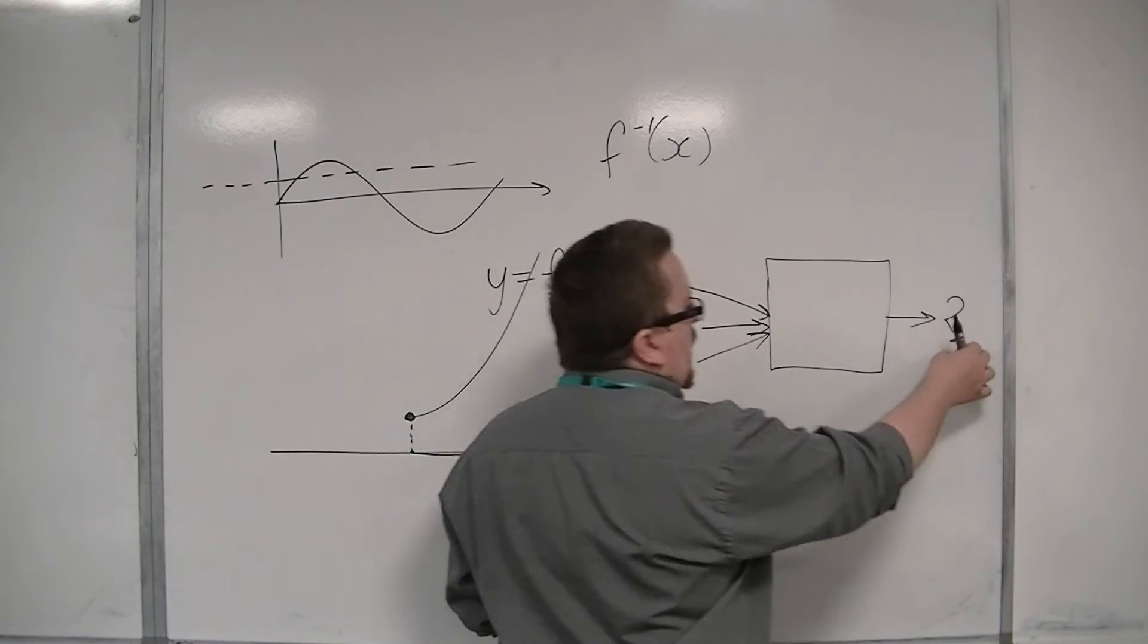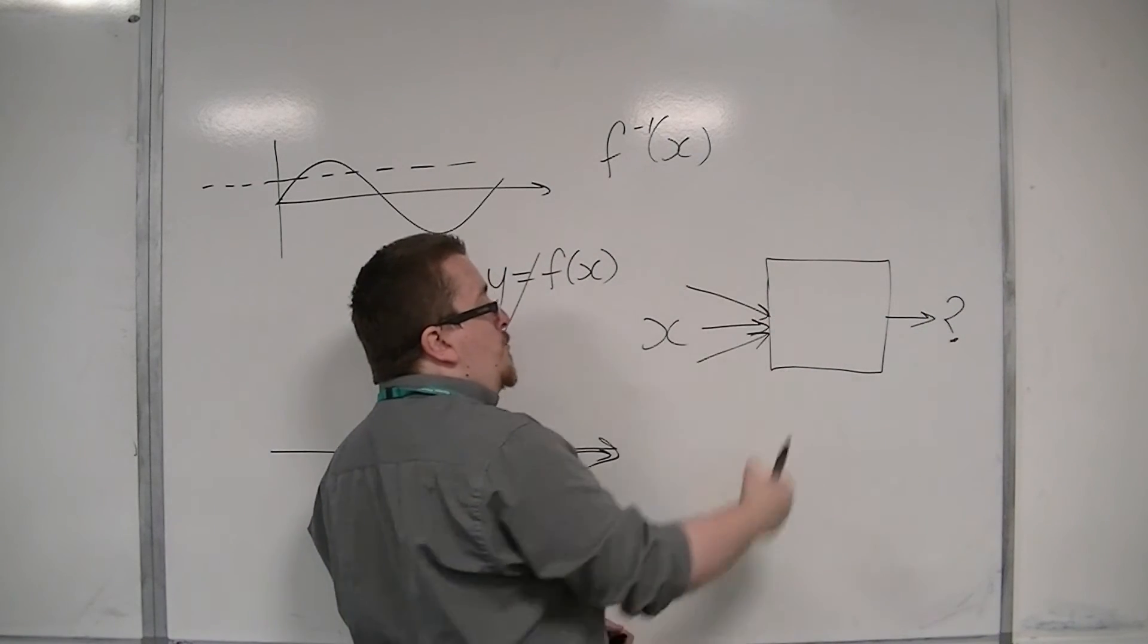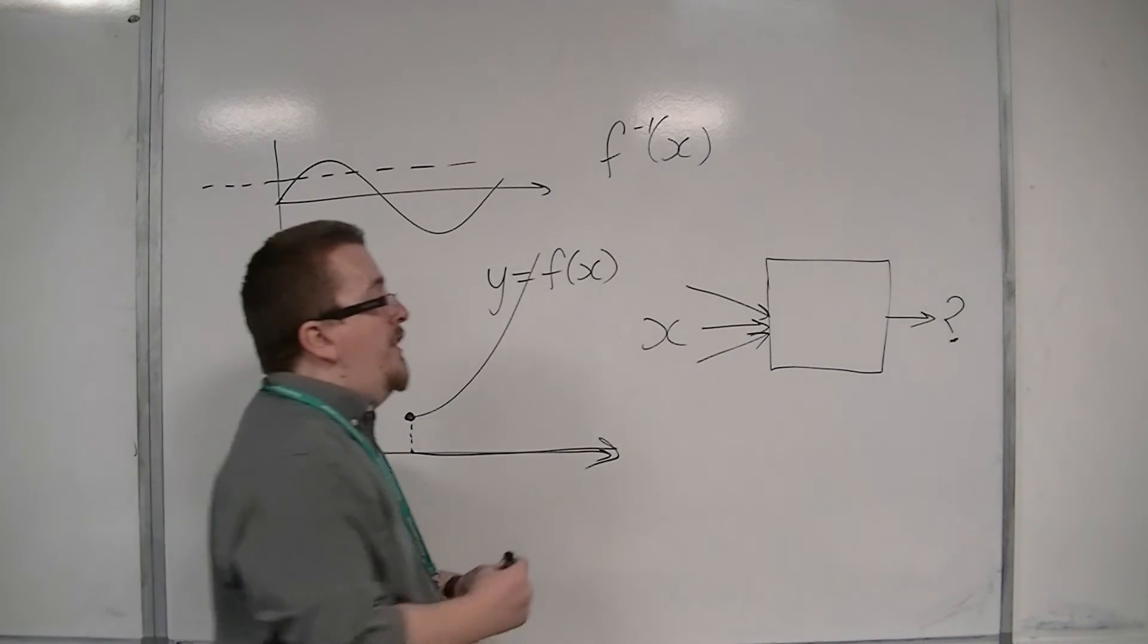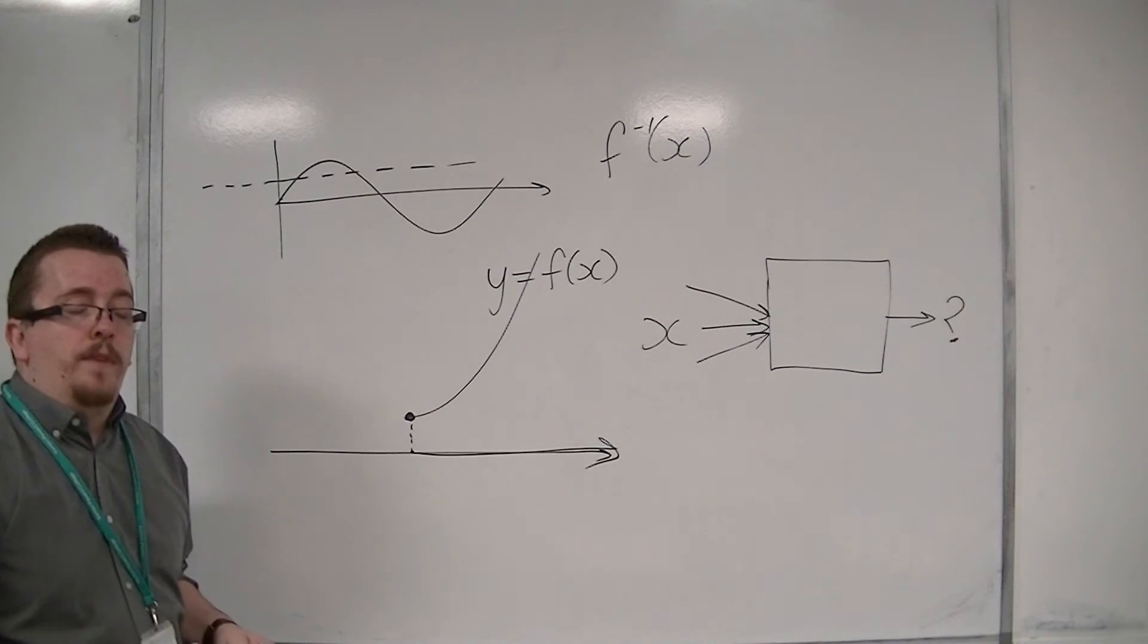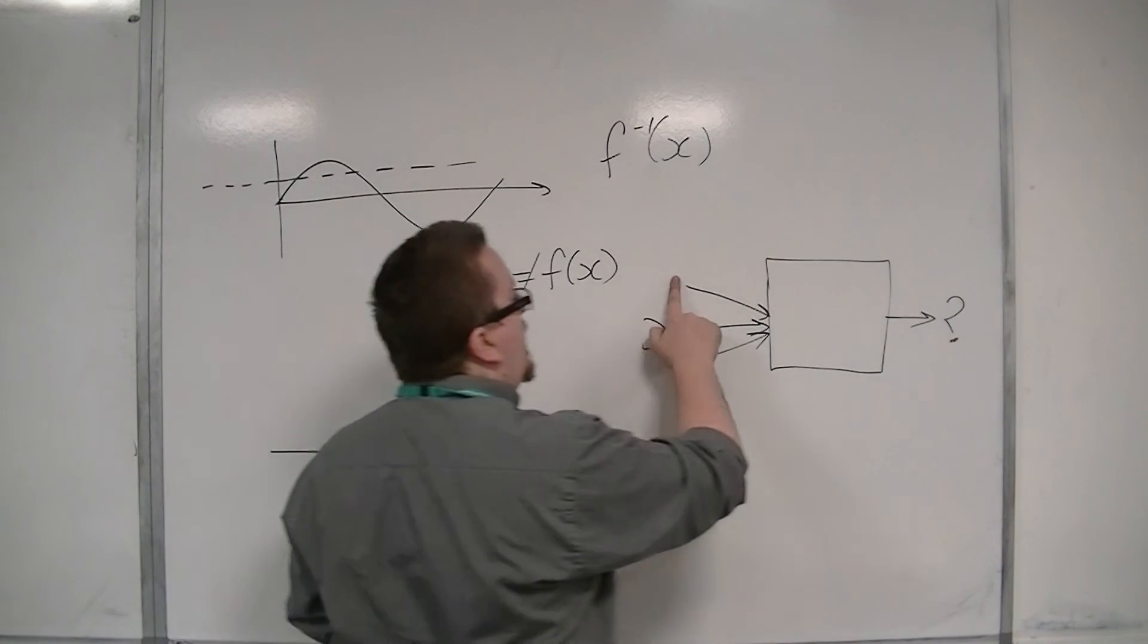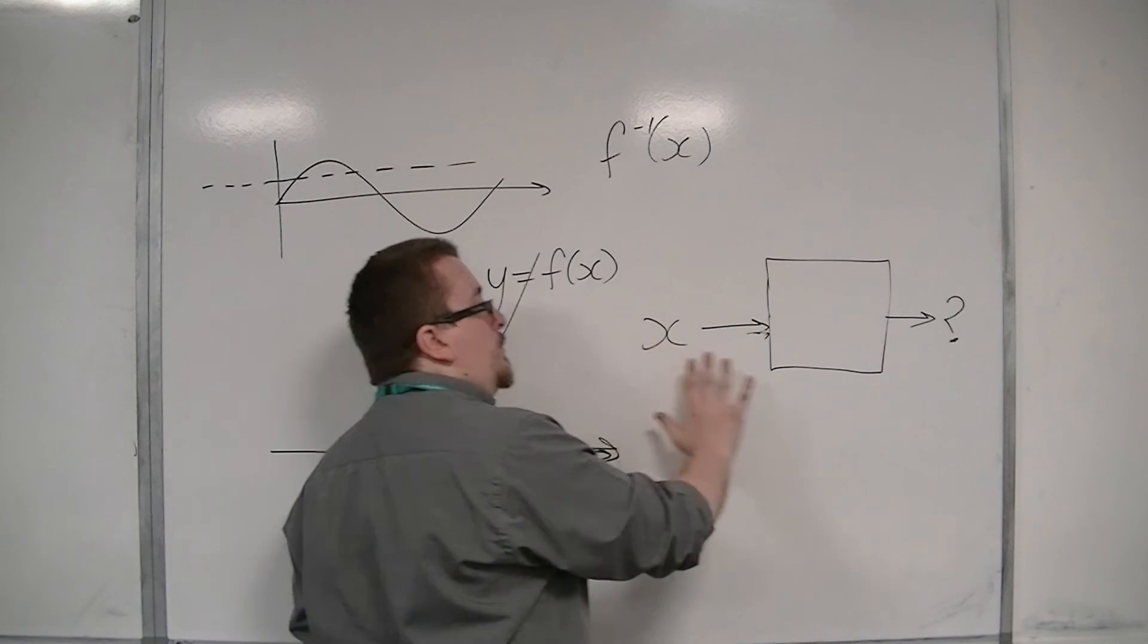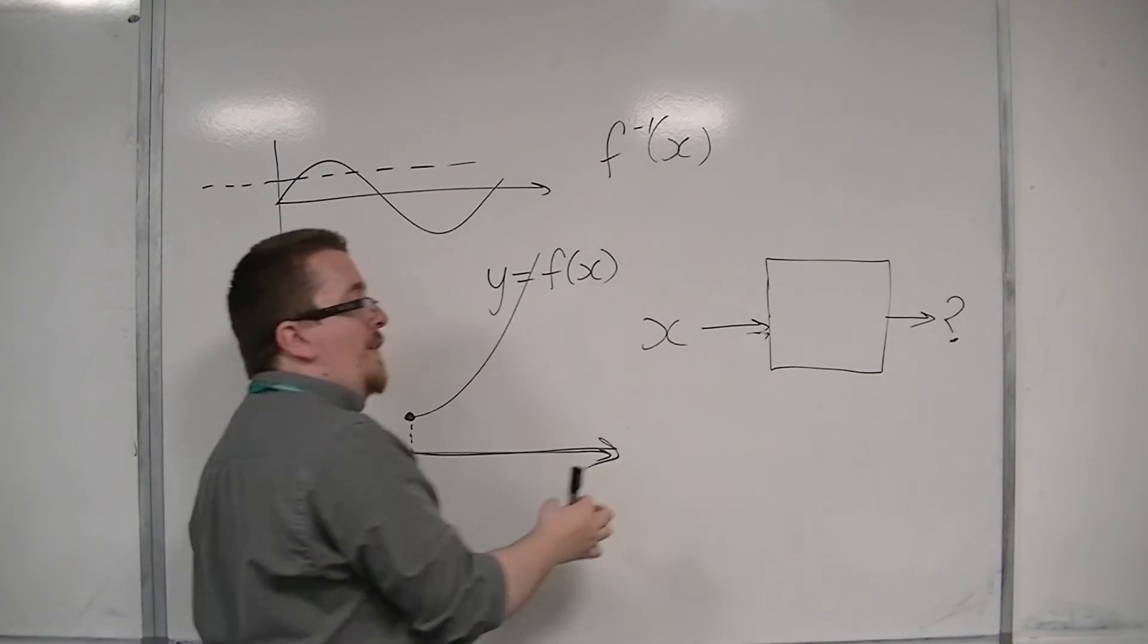So because I can potentially go from one answer to a number of different ones, and I can't choose which one that is, that must mean that this process, going backwards, could not be a function. So we must only have one value of x, giving me one value of y, and so that I can invert this process going from one value to one value.